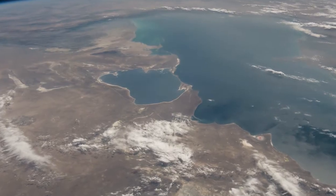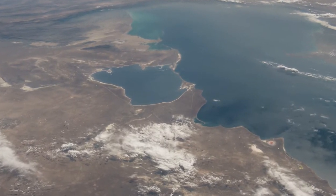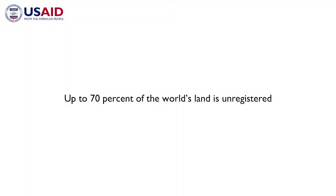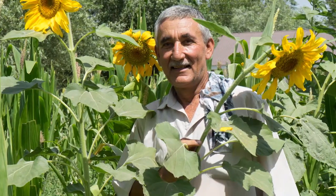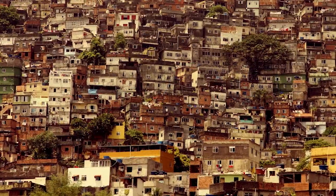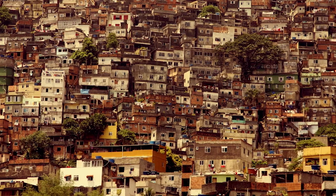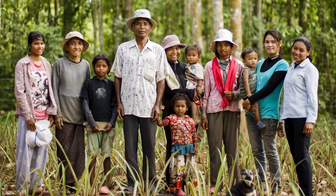Look around the world, and you'll see that land rights and land governance systems are weak. In fact, up to 70% of the world's land is unregistered, and this can create risks. At the same time, demand for land for agriculture, mining, conservation, and urban expansion is rising. When demand for land rises in situations where land governance systems are weak, this can lead to conflict. It can also mean that some groups have difficulty accessing land and resources that they need.